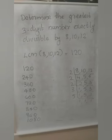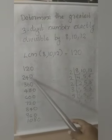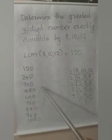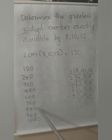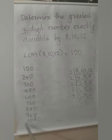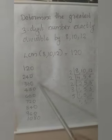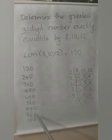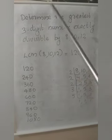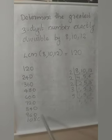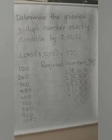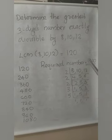Checking the table of 120: 120×1=120, 120×2=240, 120×3=360, 120×4=480, 120×5=600, 120×6=720, 120×7=840, 120×8=960, 120×9=1080. From 120×9 onwards we get 4-digit numbers. So the last 3-digit number is 960. The greatest 3-digit number in the table of 120 is 960. Therefore, the required greatest 3-digit number exactly divisible by 8, 10 and 12 is 960.